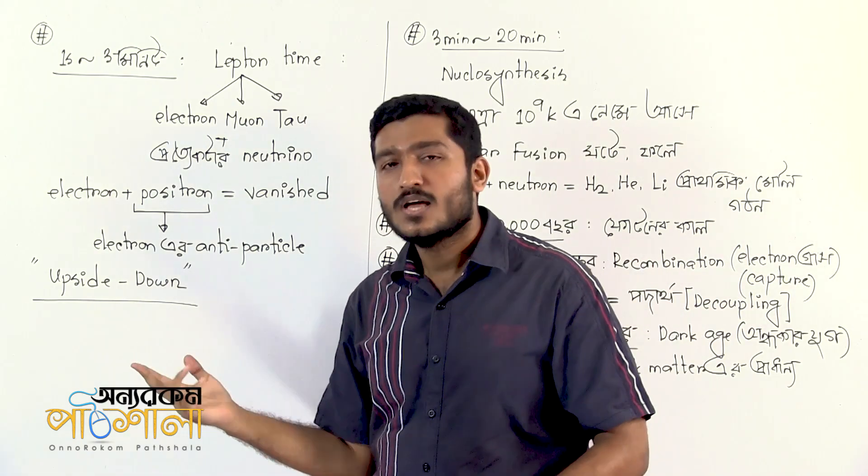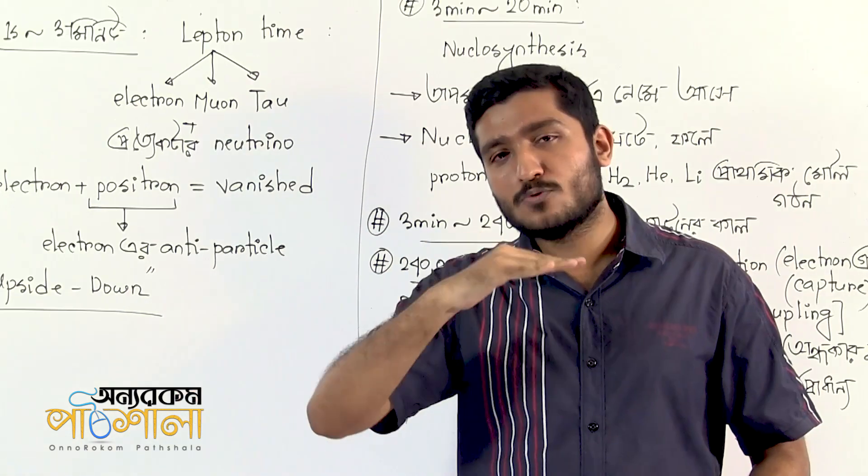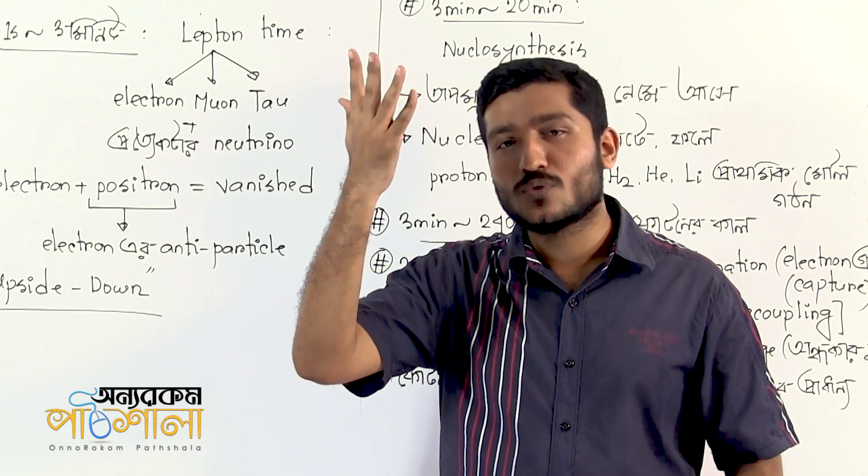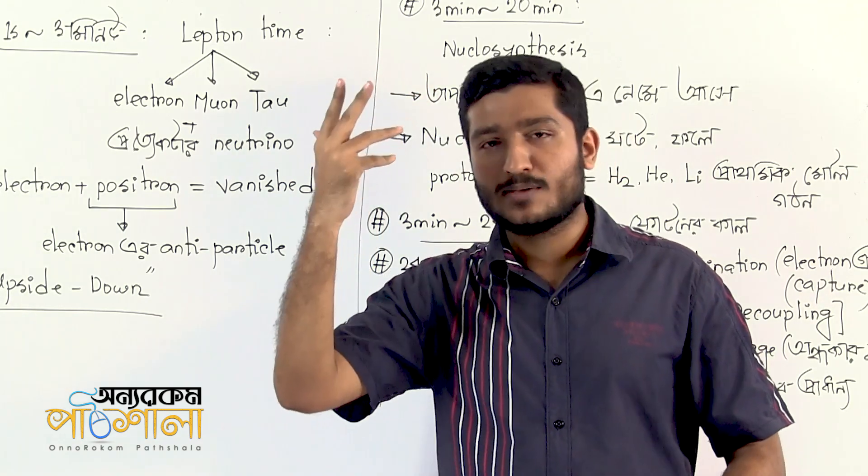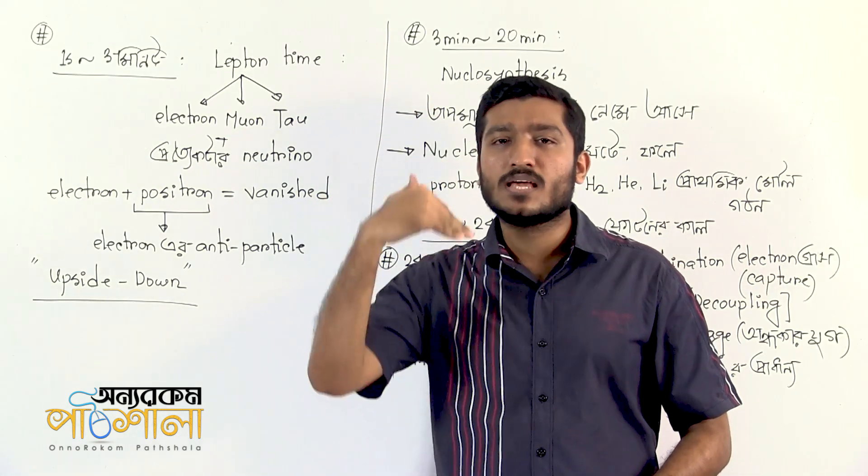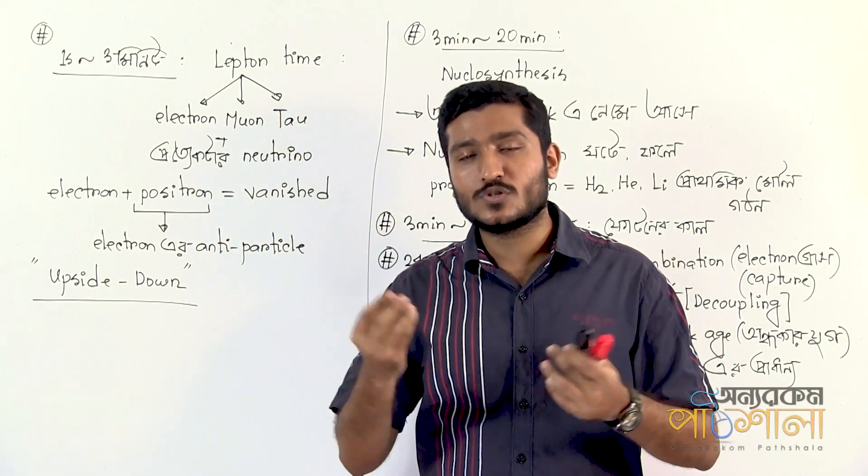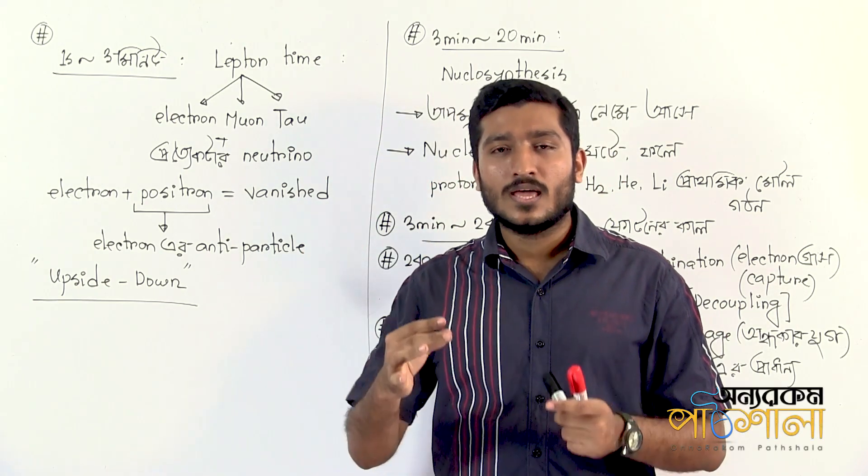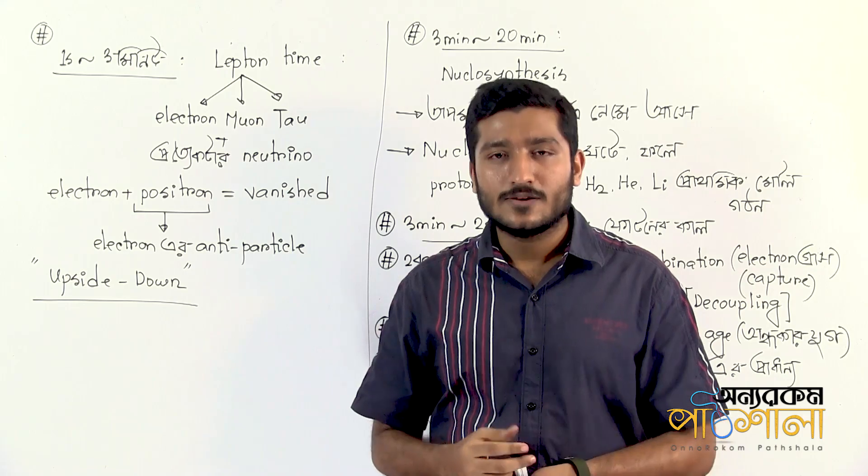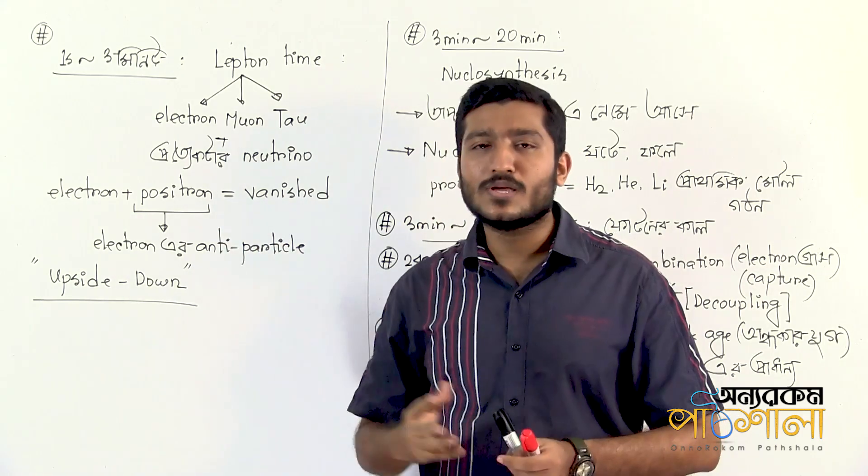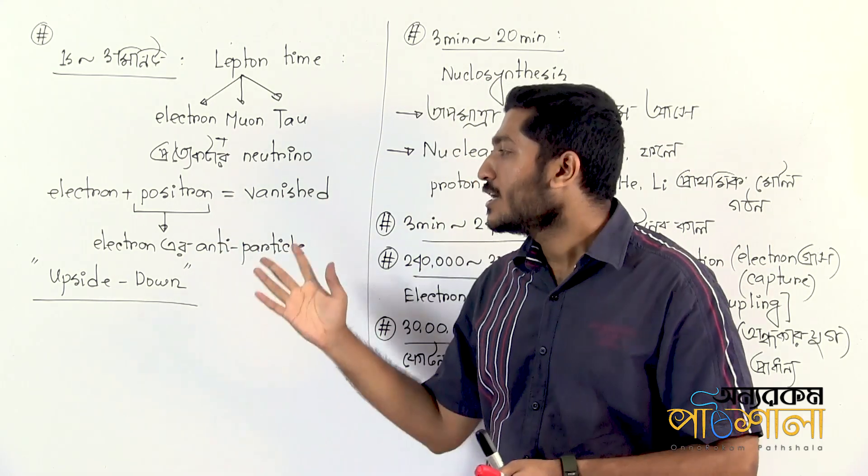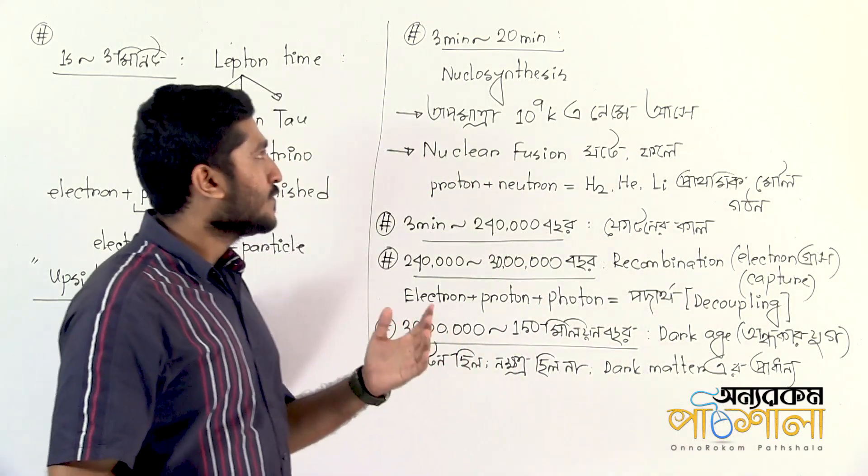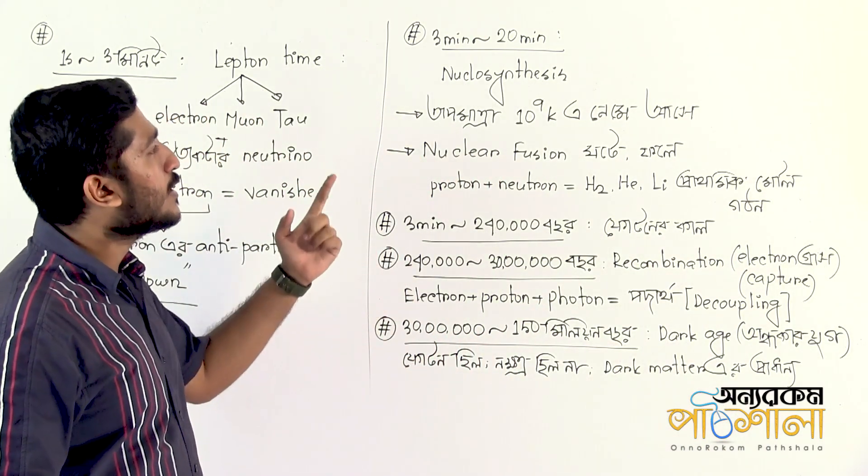When particles meet their corresponding antiparticles, they annihilate. For example, when an electron meets a positron (anti-electron), they annihilate and release energy. This matter-antimatter annihilation is a fundamental process. However, due to the slight asymmetry created earlier, some matter particles survive this annihilation phase.